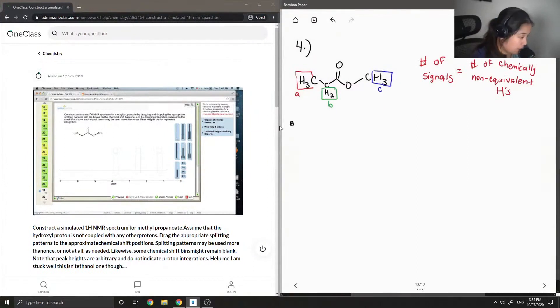And now we're going to first talk about splitting patterns. So when you have splitting, we're going to do the n plus one rule where n is your number of neighbors. This will make sense once I start actually writing it down.